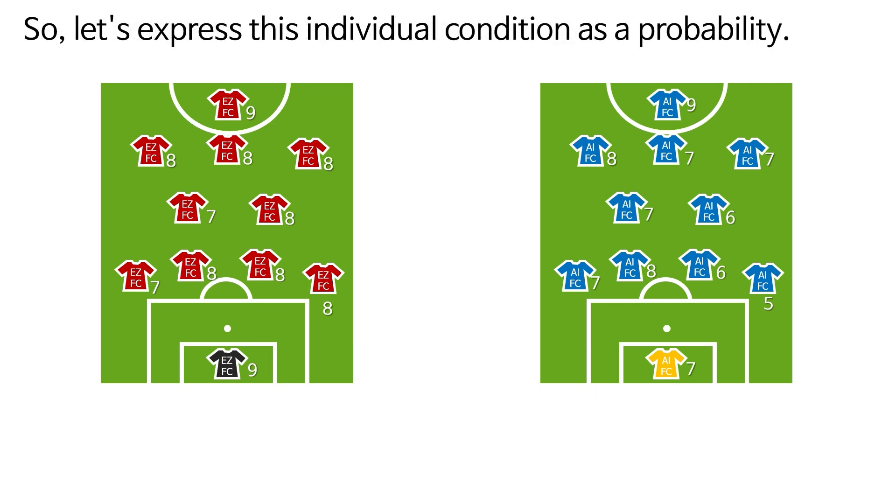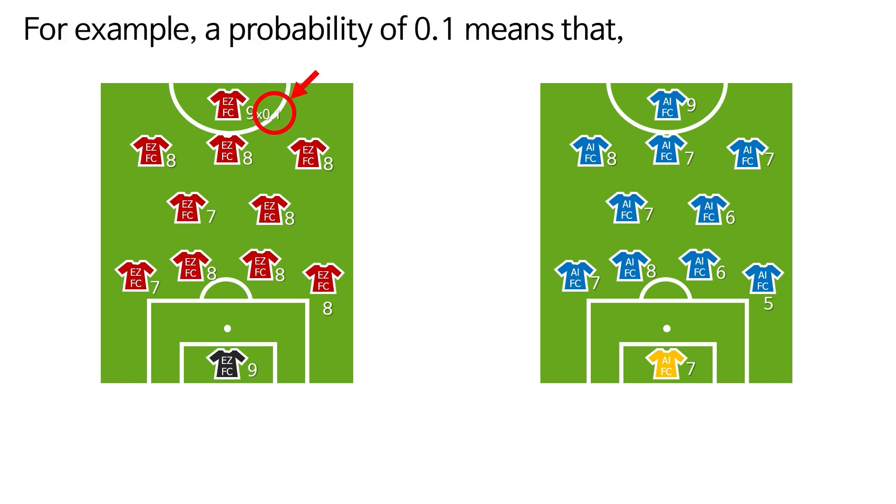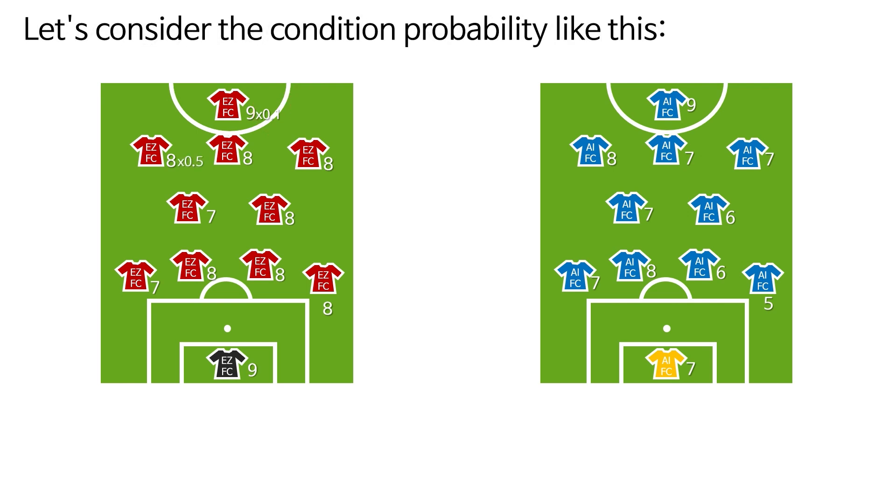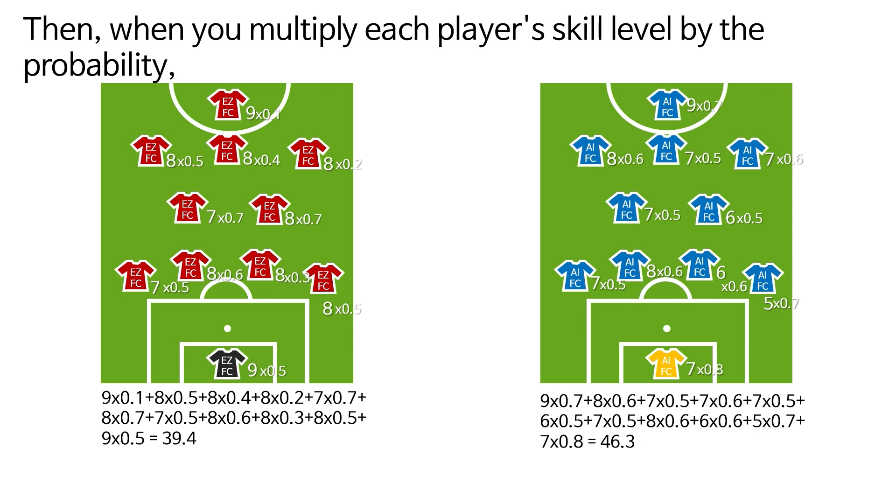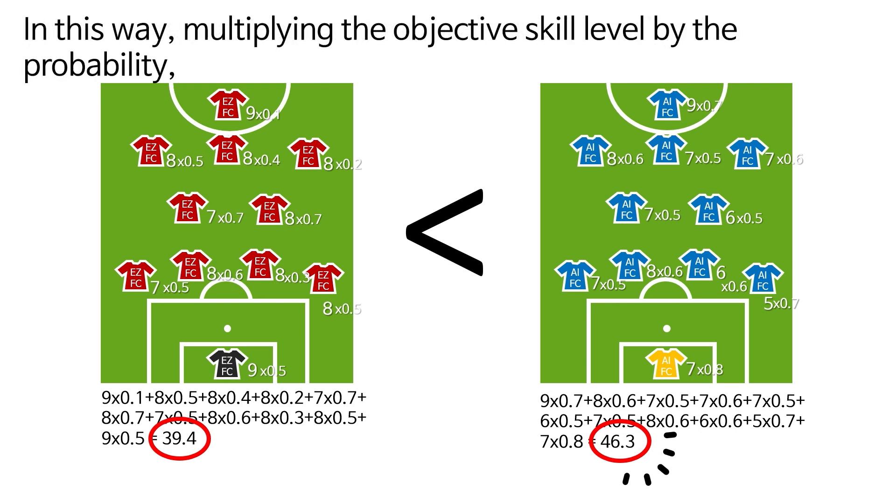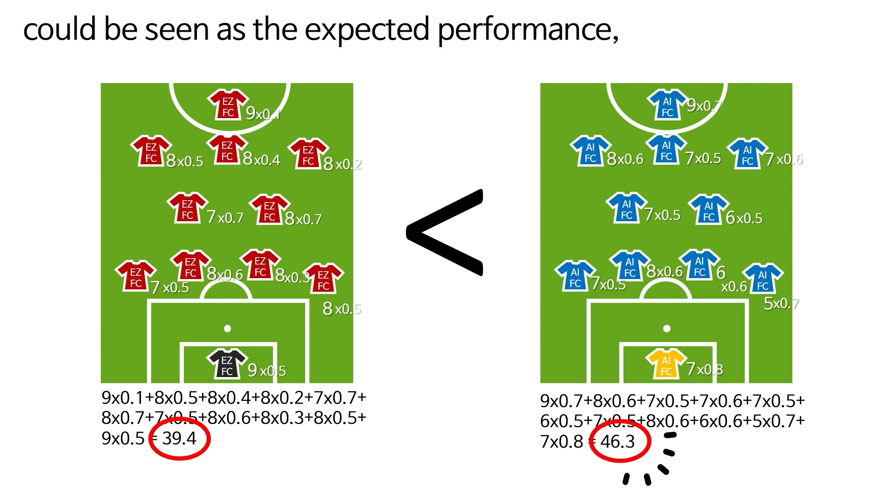So, let's express this individual condition as a probability. For example, a probability of 0.1 means that, on average, a player performs at their level about once in 10 games. Let's consider the condition probability like this. Then, when you multiply each player's skill level by the probability, you will see that the value for Team AI FC is higher. In this way, multiplying the objective skill level by the probability could be seen as the expected performance or predicted strength of each team on that day.